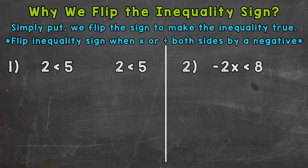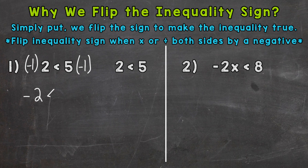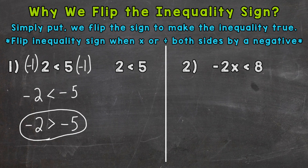Let's do negative first and see if the inequality is still true. So two is less than five, but let's multiply both sides by negative one. So two times negative one and five times negative one. We'll end up with negative two is less than negative five, which is not a true inequality. Negative two is not less than negative five. So we needed to flip the inequality sign to make that true — negative two is greater than negative five. Now that inequality is true. Not flipping the sign, we get an inequality that is not true, and again, this is only if you multiply or divide both sides by a negative.